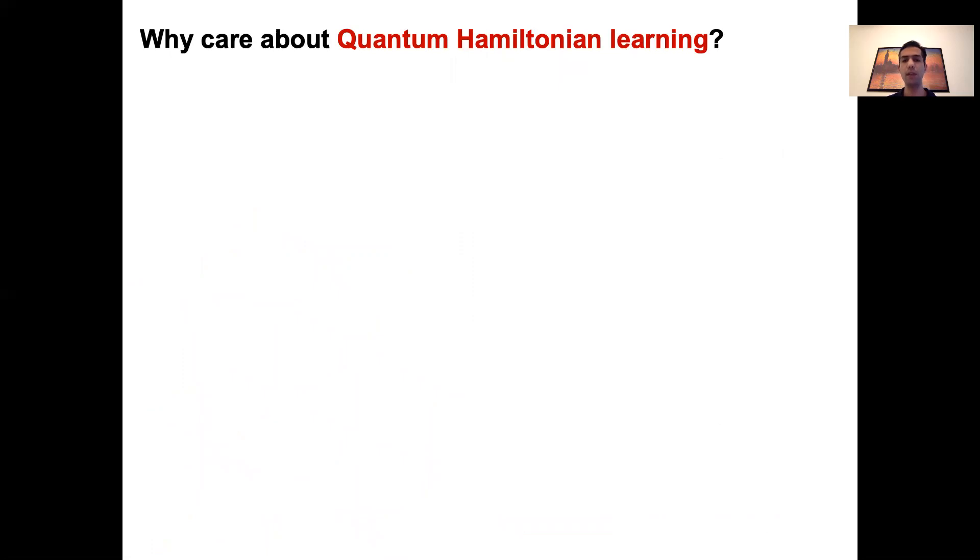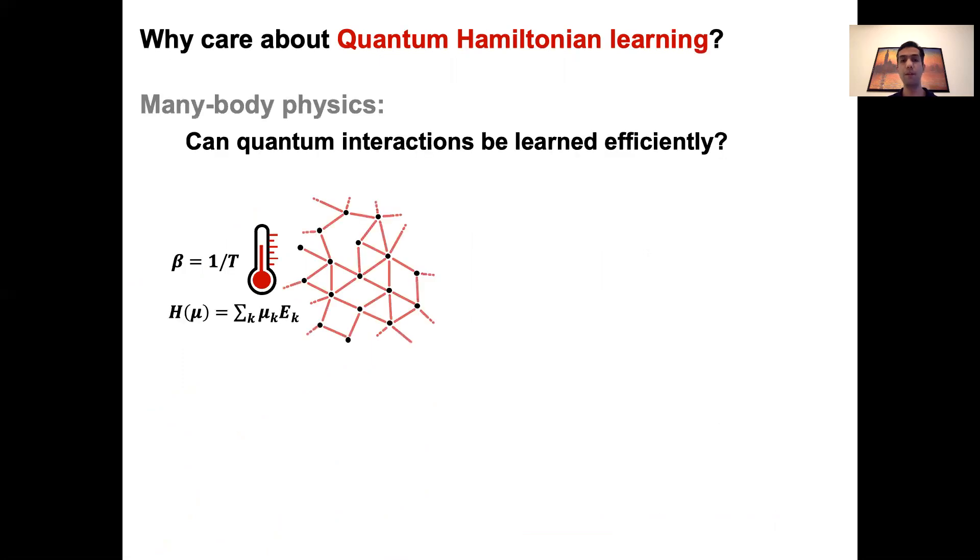So before going on, let me tell you more why we care about this problem in the first place. The first motivation comes from many-body physics, where one thing they would like to figure out is the interactions between quantum particles encoded in the Hamiltonian in a previously unknown or newly synthesized material. Now, suppose the quantum many-body system is held at some fixed temperature T with a specific Hamiltonian H_μ. These particles are in a quantum state, which is the Gibbs state we saw in the previous slides, where beta is the inverse of the temperature of the system. To infer the interactions between particles, one thing we can usually do is to perform simple local measurements on these particles. And we would like to have algorithms that, given these measurement data, learns the Hamiltonian of the system, which is equivalent to learning the interaction parameters μ.